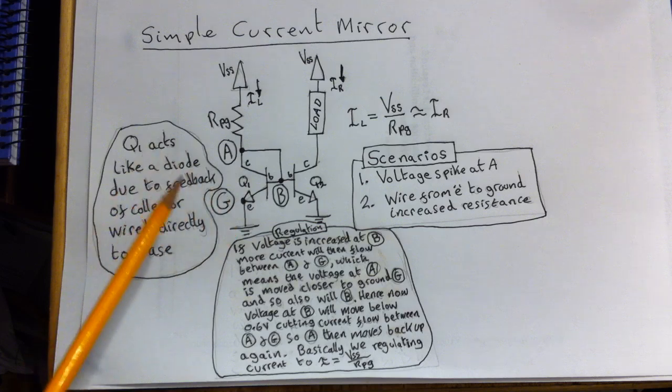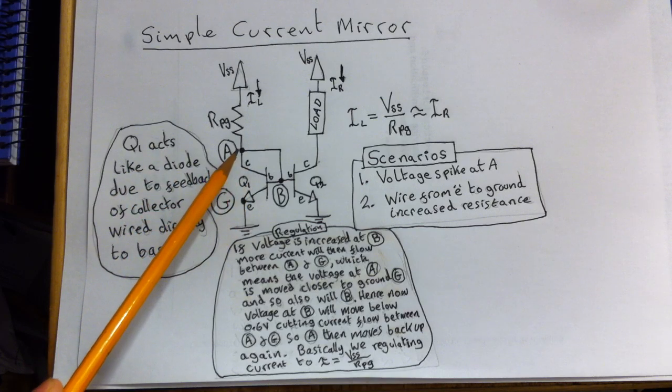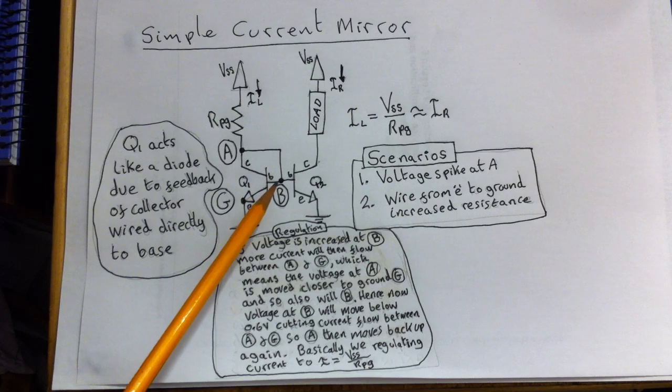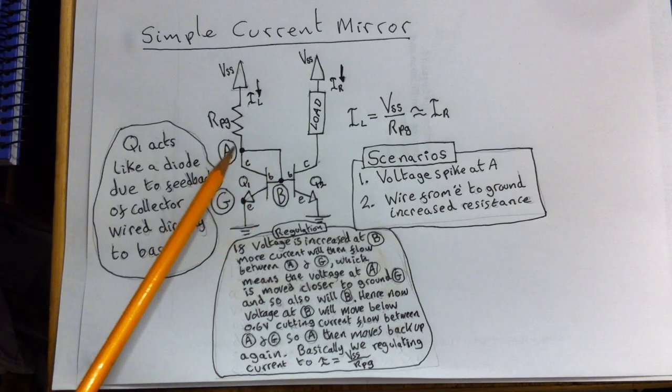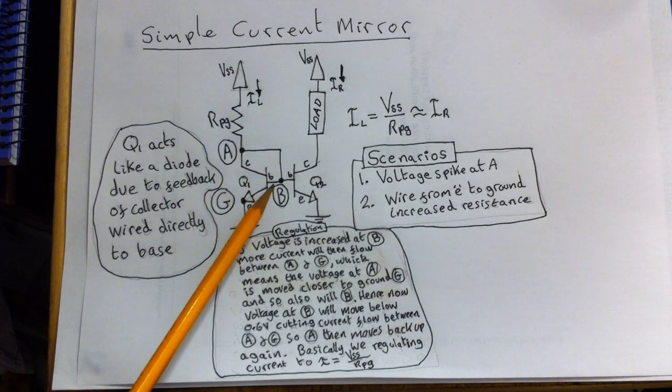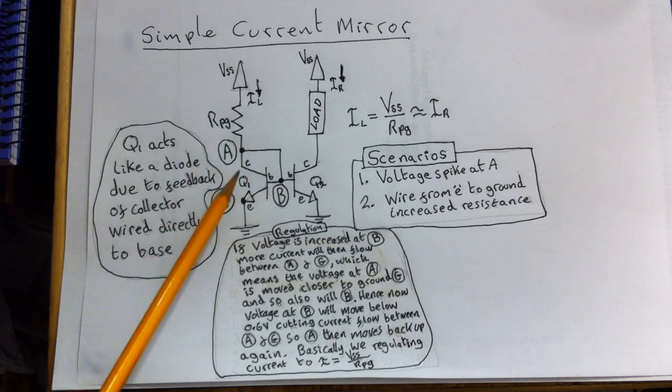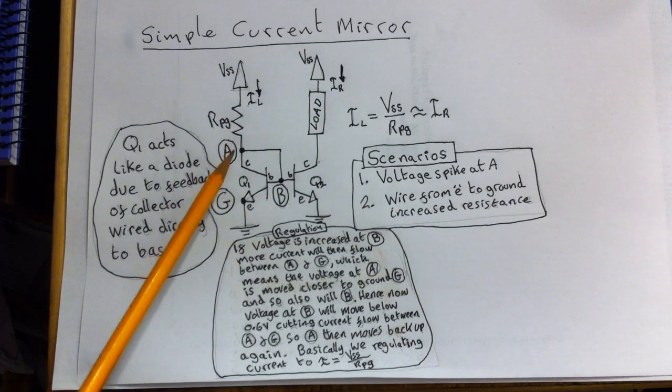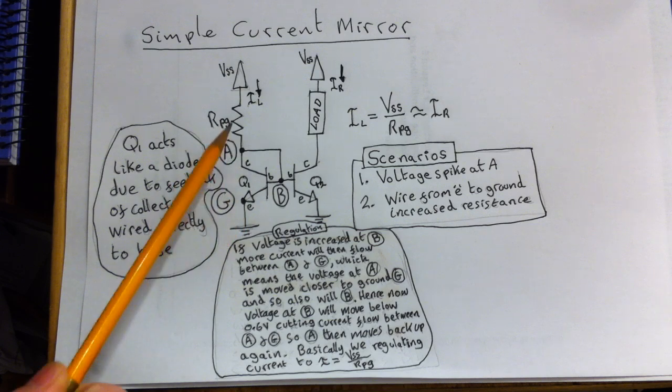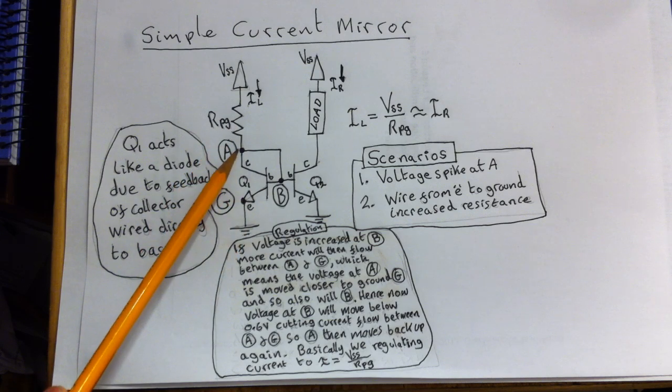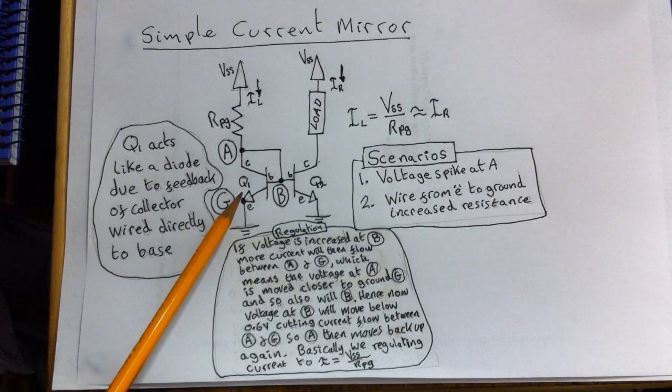The first thing to note in the transistor Q1 here is that the collector is also connected to the base. Now, by connecting the collector to the base, we're in effect forming a PN junction diode. So this, from A here to G, is in effect a diode.